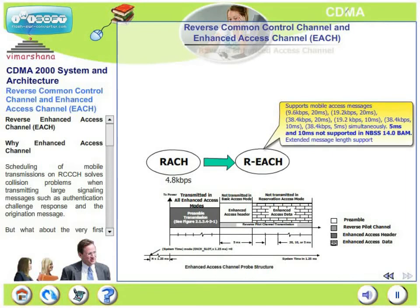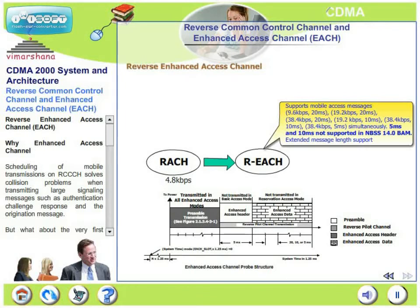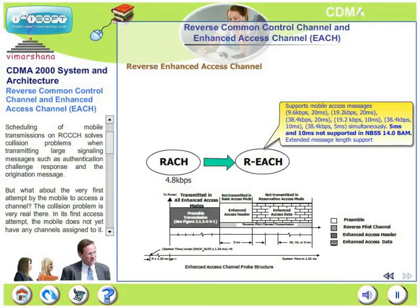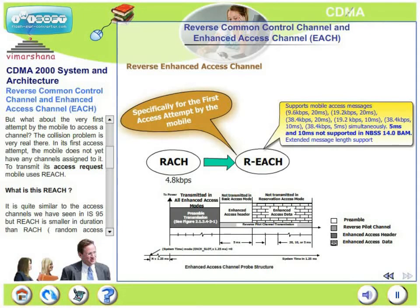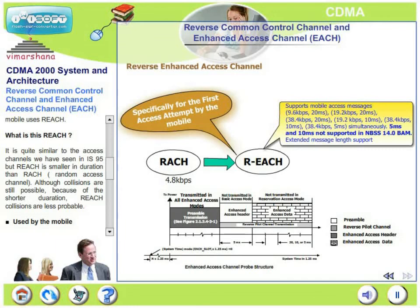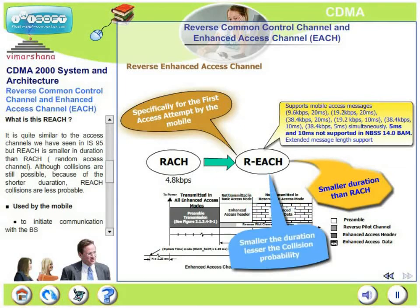The reverse enhanced access channel (REACH) addresses the collision problem during the very first access attempt by a mobile, before any channels have been assigned. REACH is similar to the access channels in IS-95 but is shorter in duration than RACH (random access channel). Although collisions are still possible, because of the shorter duration, REACH collisions are less probable than RACH collisions.